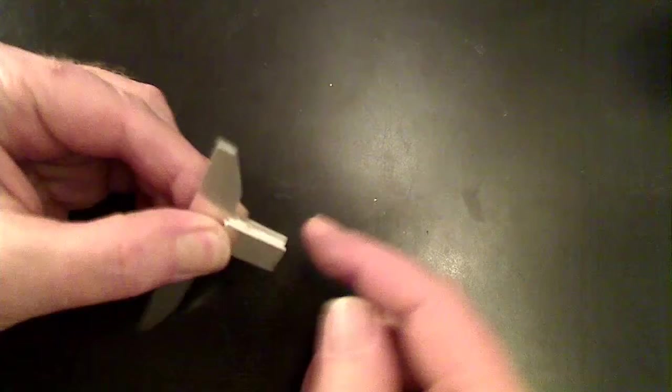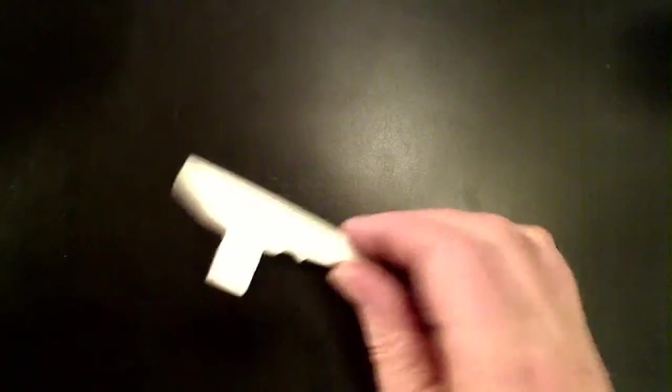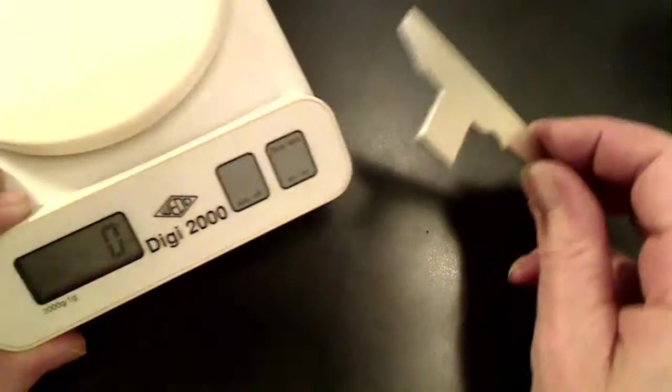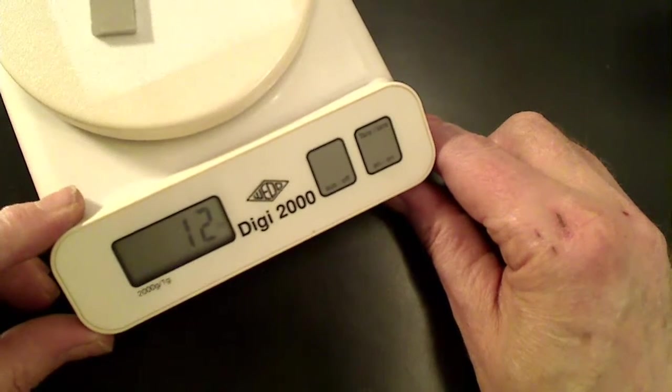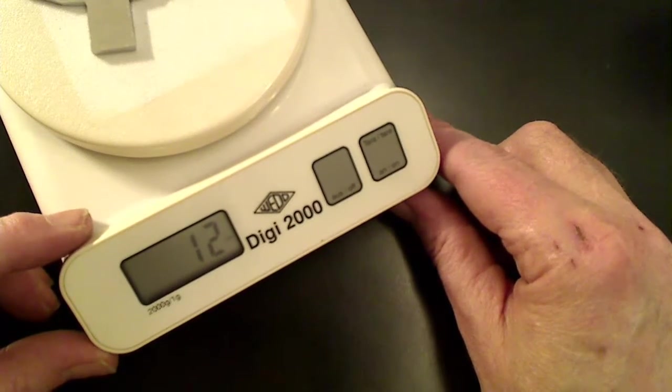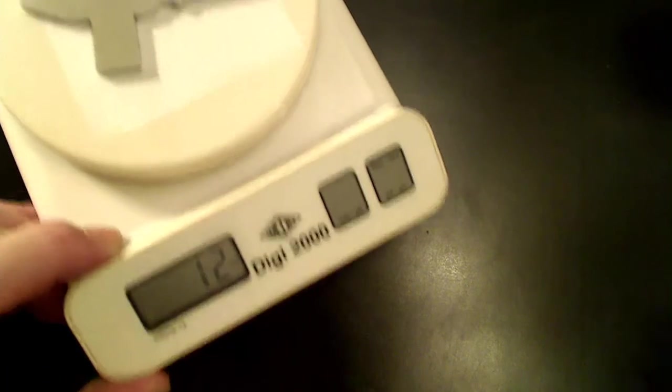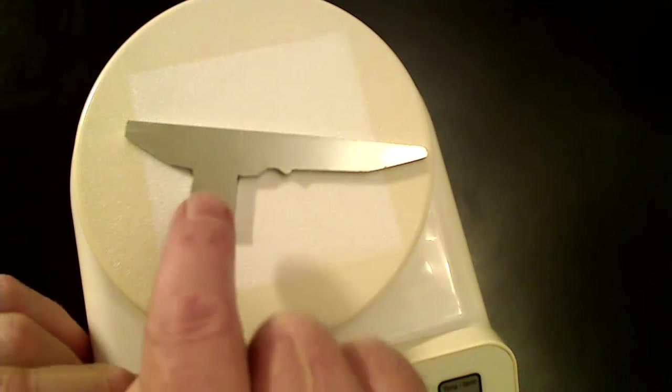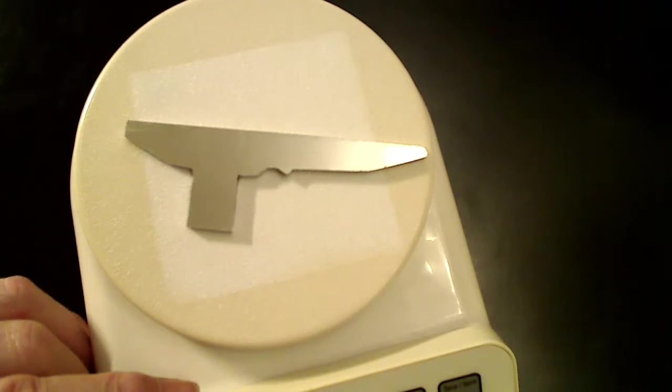So for those that are wondering about weight, the previous one was up around 18 in the original form. This one without the holes to lighten it comes in at 12 grams. If we put the holes in across the top and down the center, it should be quite a lot lighter.